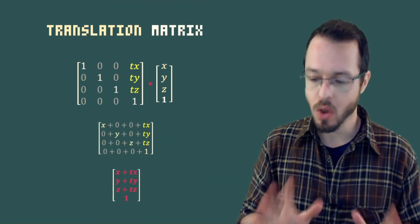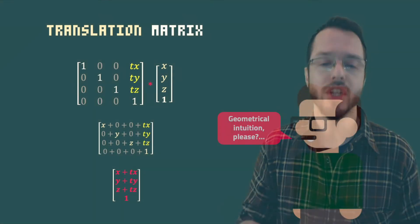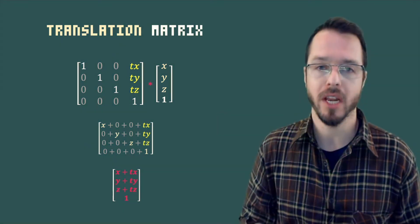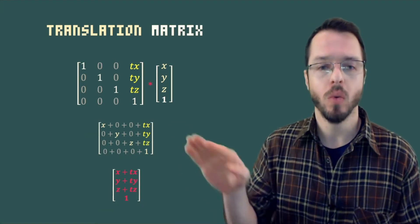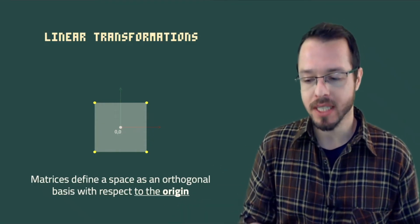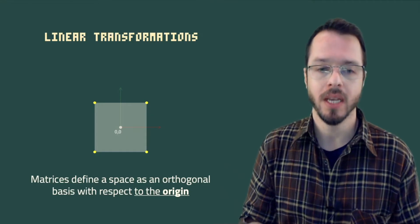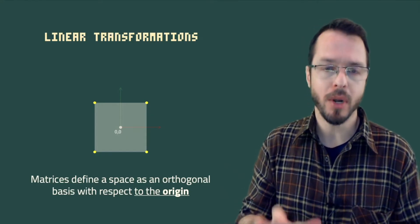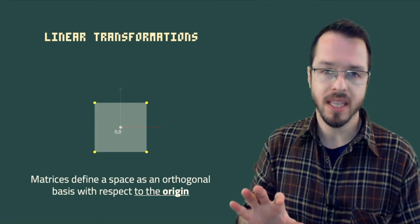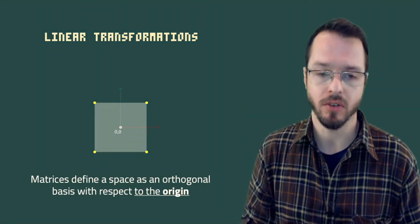But that's not the only thing I want to explain — beyond the mathematical expansion of matrix multiplication, I also want to create some geometric intuition. Let's talk about linear transformations. Matrices define a space as an orthogonal basis with respect to the origin. Basically, matrices apply transformations but everything is with respect to the origin — we cannot change the origin. We are using these ideas of linear transformations: matrices are responsible for applying scaling, rotation, translation, and so on.